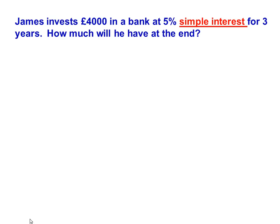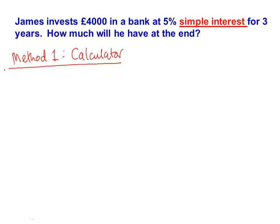There are two ways to answer the question, depending on if you have a calculator or not. This is method number one, which uses a calculator. So if this is in the calculator exam, you can use this method. We look at how many years it is — you can see it's a 3-year question — so we're going to set it up with our 1-year, 2-year, 3-year setup.